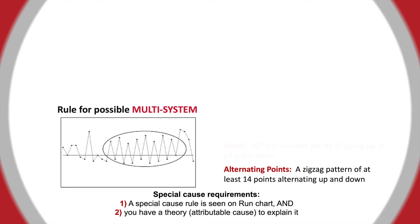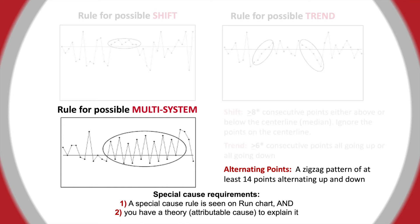If you observe a zigzag pattern on a run chart for 14 or more points, this would suggest that there are two different systems alternating with one another. An example could be day shift versus night shift. Separate the data into two charts for each system to learn more.